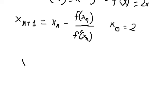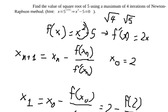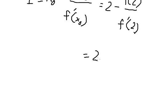Now, for x₁, that's x₀ minus f(x₀) over f'(x₀). So we put the value in here. Number 2 will go in here and here. So we have 2 minus (2² - 5) over (2 × 2). This one we calculate, and we get about 2.25.